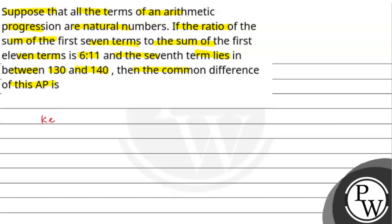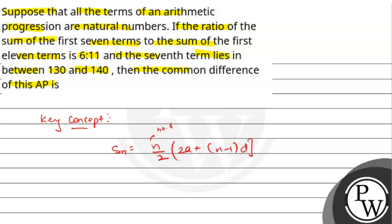In this portion, the key concept we can use is: S_n = n/2 × (2a + (n−1)d), where n is the number of terms, a is the first term, and d is the common difference.